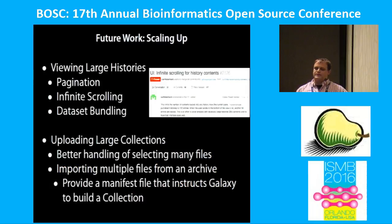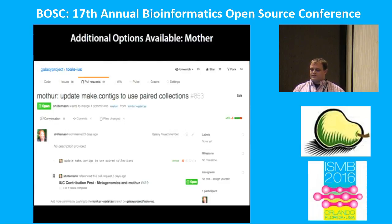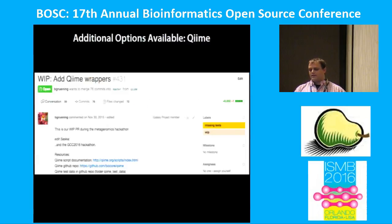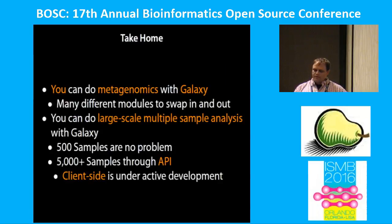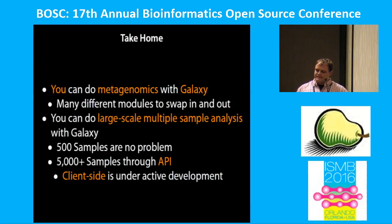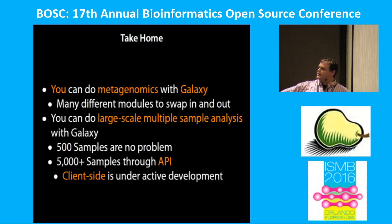Going to the future, what we need to work on is viewing very, very large histories. We also have additional packages such as MOTHUR, CHIME, FROGS, and so forth. What I hope you've taken home is that you can do metagenomics with Galaxy, and you can do large-scale multi-sample analysis — 500 samples using the UI, no problem. For 5,000 samples right now you need to use the API, but we're working very hard on getting the client side to work on that.